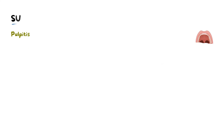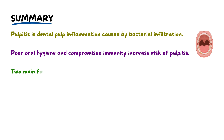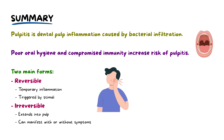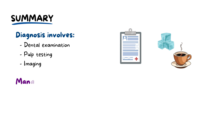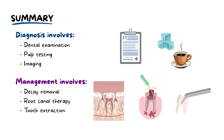To summarize, pulpitis is an inflammation of the dental pulp caused primarily by bacterial infiltration through caries or fractures. Risk factors include poor oral hygiene and potentially compromised immunity. Pulpitis presents in two main forms: reversible, involving temporary inflammation triggered by stimuli like temperature changes with no irreversible damage, and irreversible, signifying infection extending into the pulp leading to irreversible damage — manifesting as symptomatic or potentially asymptomatic if necrosis is present. Diagnosis involves a comprehensive dental examination, pulp testing, and imaging. Management varies, with reversible pulpitis addressed through restorative treatments, while irreversible cases may require root canal treatment or extraction depending on severity.